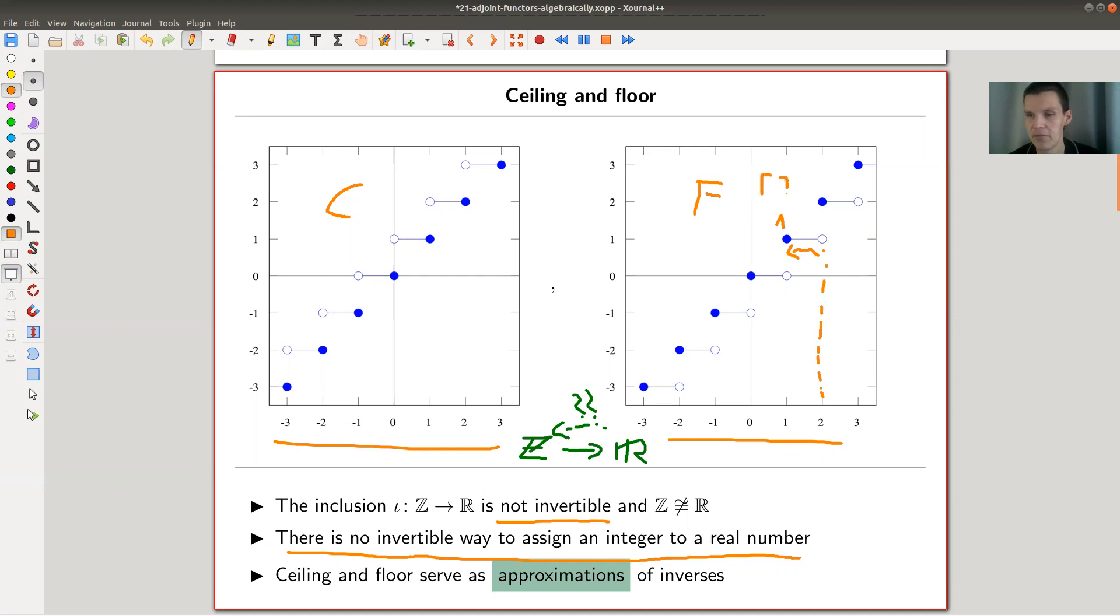This is probably the ceiling function. So the floor function should send everything below two, whatever, 1.9 to one. This is kind of nice.